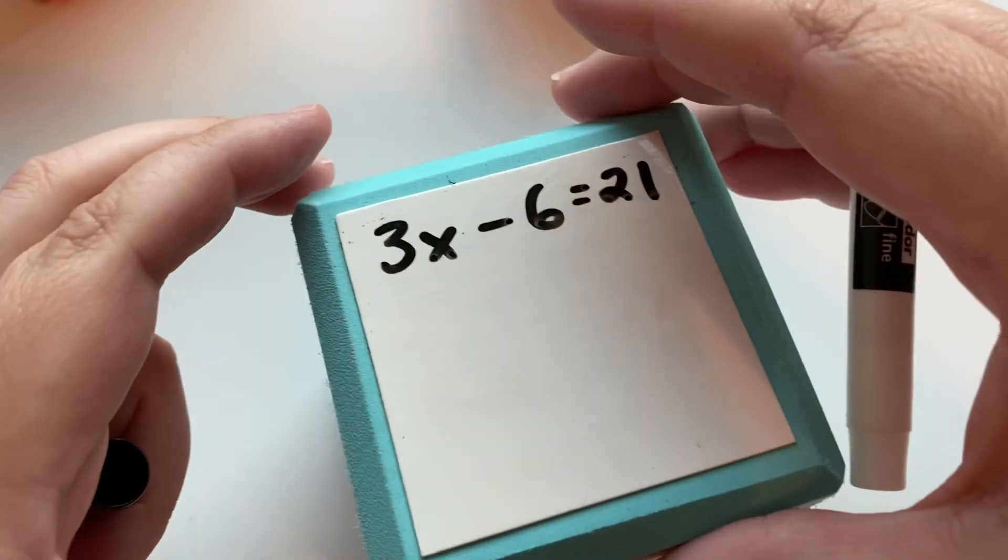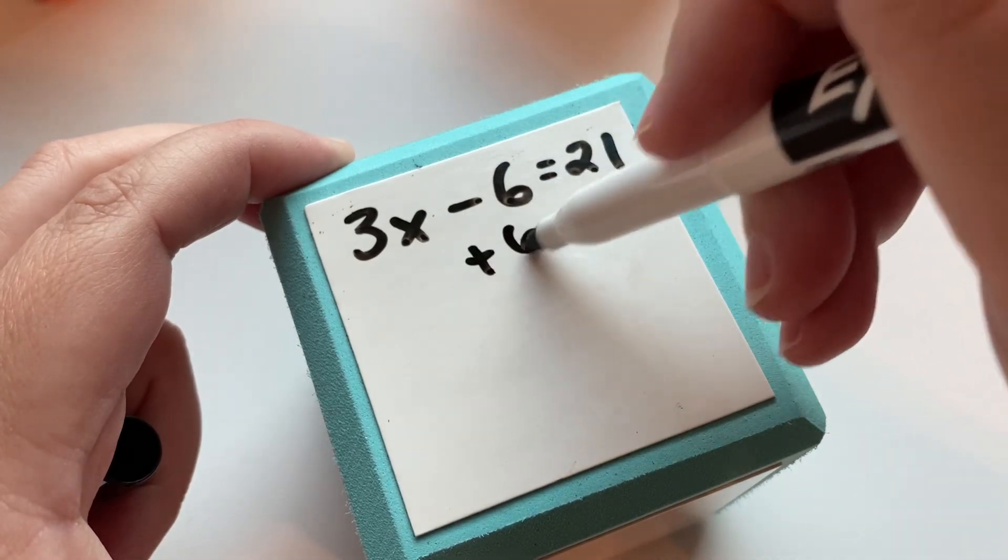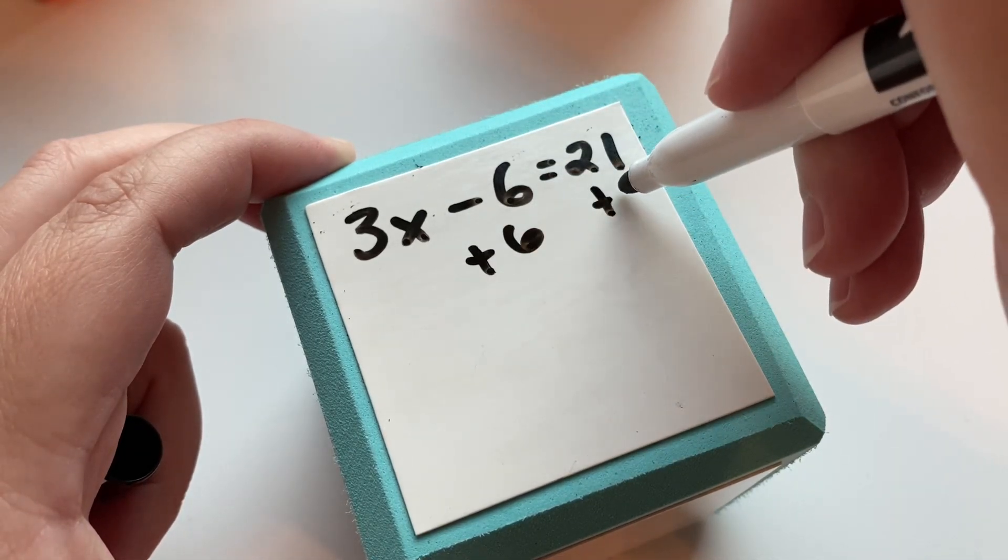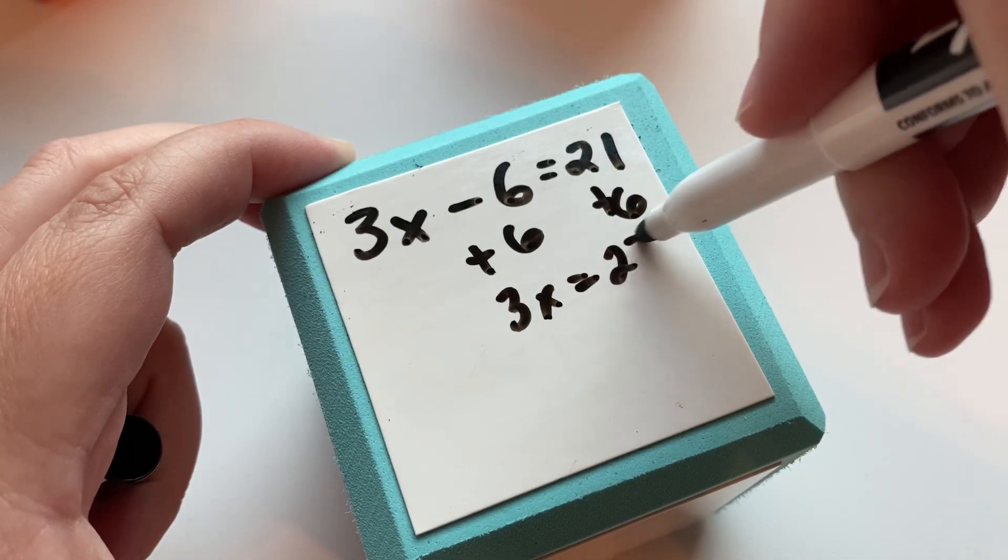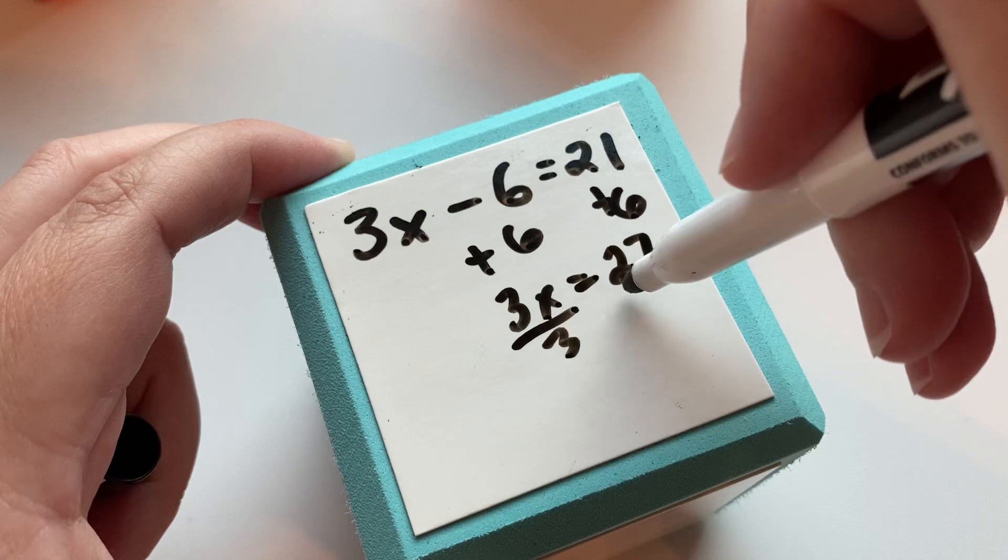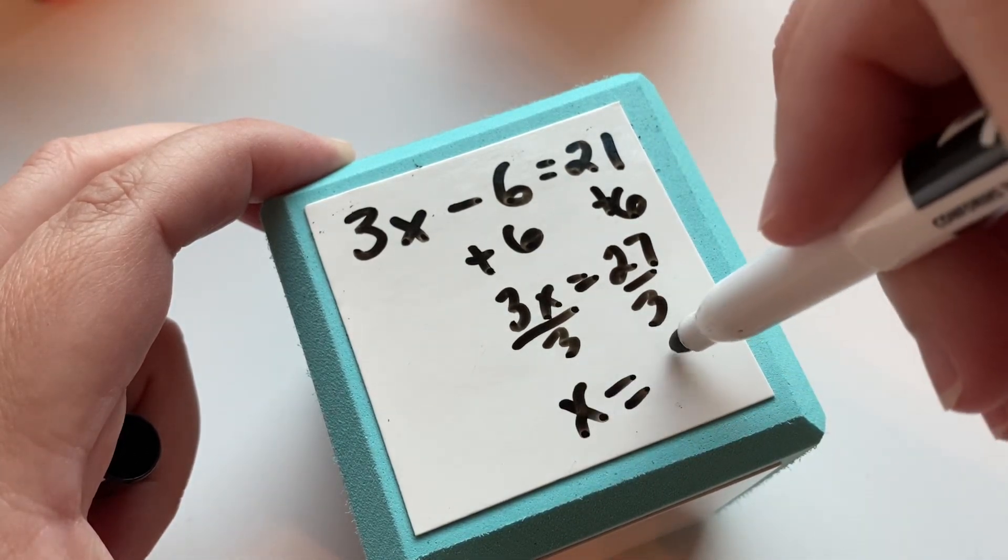And we're going to do one last example. So once again, we're going to do plus six on both sides. We get 3x equals 27. Divide both sides by three. And x equals nine.